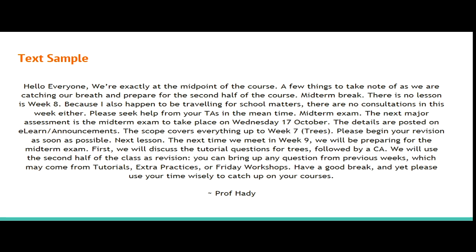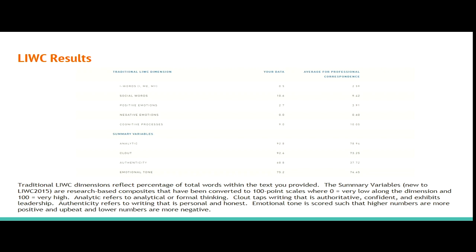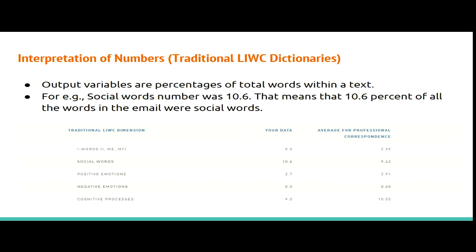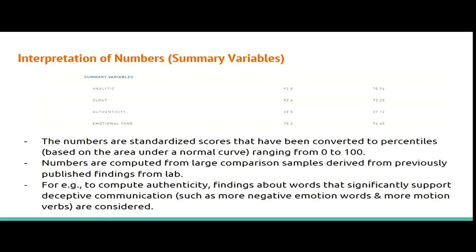We'll now go through the demonstration. It's not really a live demonstration, but we managed to get the professor's email recently and ran it through the LIWC software to see what results we'd get. The first category is the traditional LIWC dimension. The output variables are a percentage of total words within the text — for example, social words has a score of 10.6, meaning 10.6% of all words in the email were social words, which is slightly higher than the average for professional correspondence. LIWC also recently introduced summary variables, which are standardized scores converted to percentiles under a normal curve from 0 to 100, computed from large comparison samples. All variables in the email were actually higher than average according to LIWC.